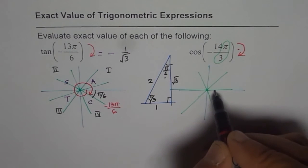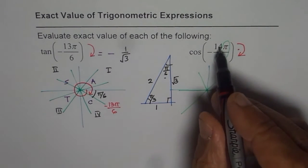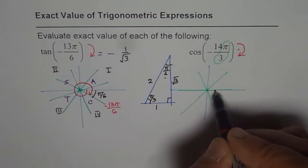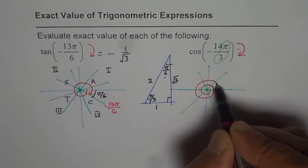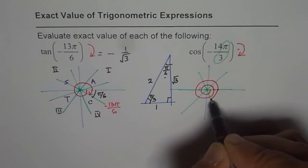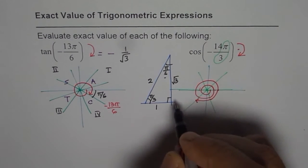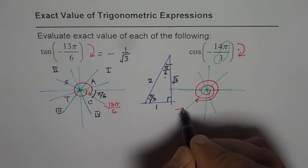We are looking for minus 14π by 3. Minus means we will move from here, in clockwise direction, 14. So 3 and 3 is 6. One full circle means 6 for us, another circle means 12, 13, 14. So we land up here, which is minus 14π by 3 for us.